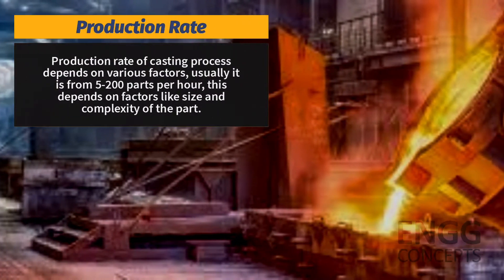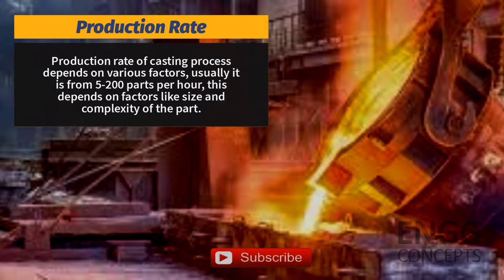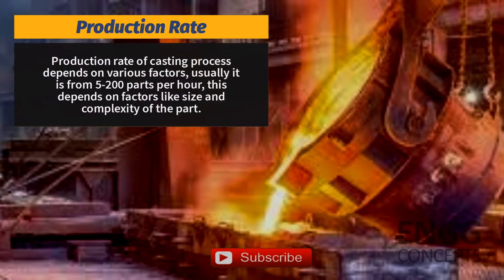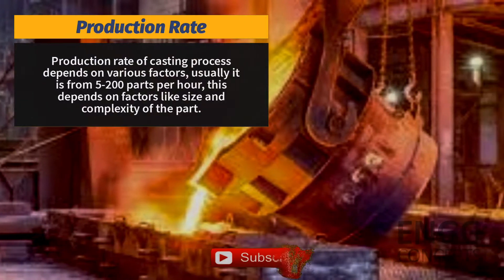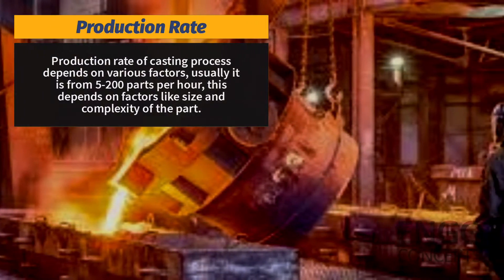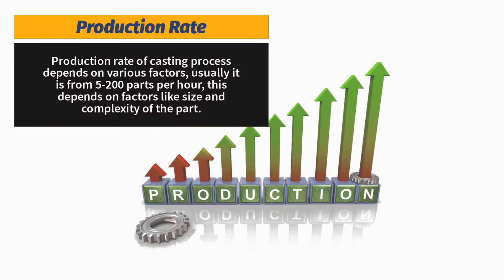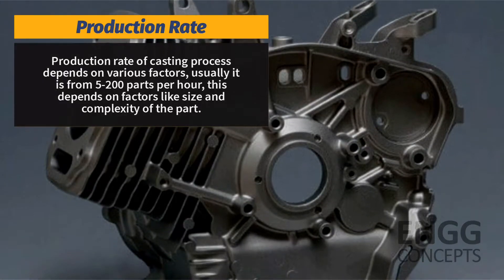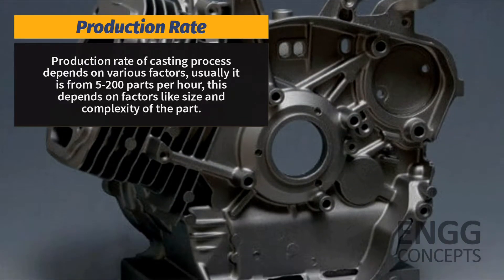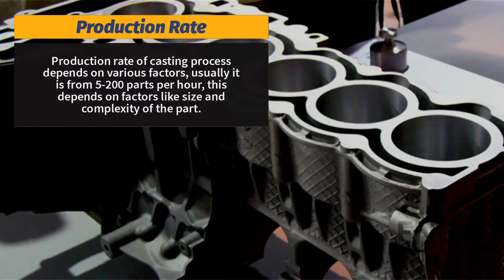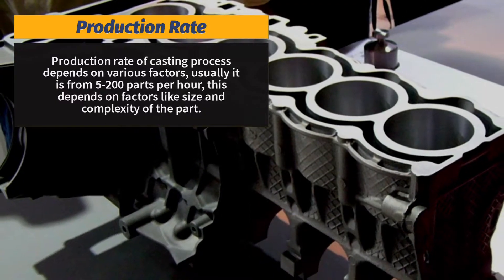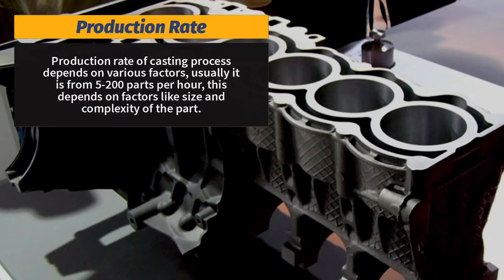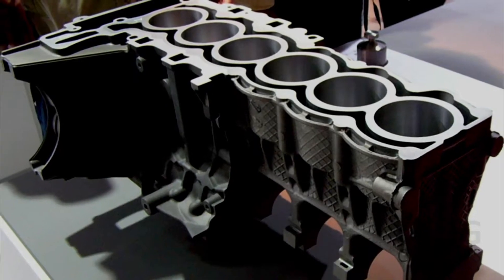The production rate of the casting process depends on various factors, including the type of casting process, equipment used, casting materials, and others. Usually it is from 5 to 200 parts per hour, depending on the size and complexity of the part.